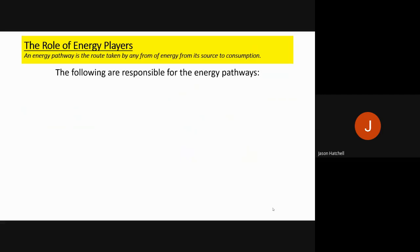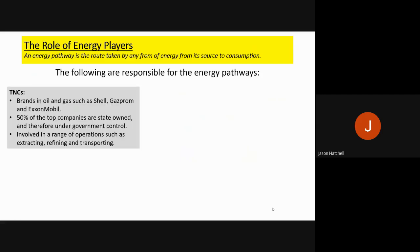Now let's look at the role of energy players. An energy pathway is the route taken by any form of energy from source to consumption. The following players are responsible for energy pathways: TNCs, such as Shell, Gazprom, and ExxonMobil. 50% of the top energy companies are state-owned and therefore under government control. These are involved in operations such as extracting energy at source, refining it, transporting it, and selling it.